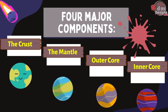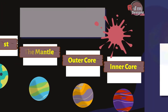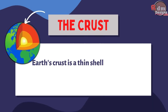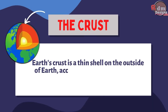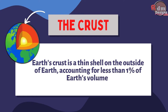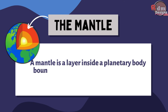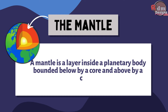Those are the four major components of our Earth. The crust — Earth's crust is a thin shell on the outside of Earth, accounting for less than 1% of Earth's volume. While the mantle is a layer inside the planetary body bounded below by a core and above by a crust.